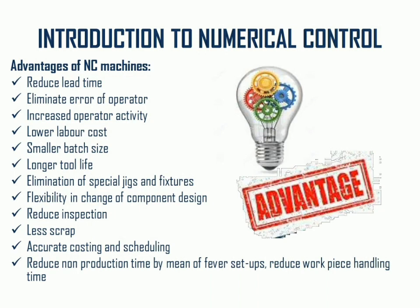Less scrap is generated due to the repeatability and high accuracy of manufacturing processes, which means raw material can be saved and optimally utilized. Accurate costing and scheduling can be done with numerical control machines — we can easily identify time requirements, prepare master schedules, and plan capacity requirements. Non-production time is also reduced.